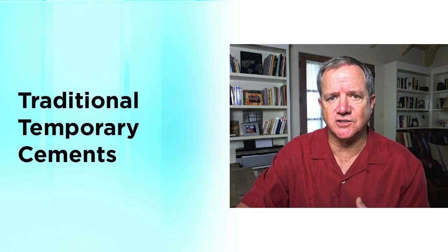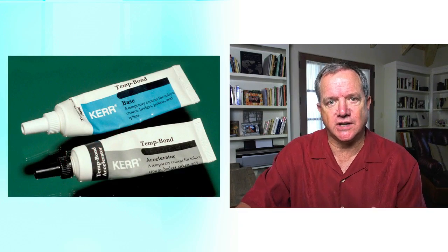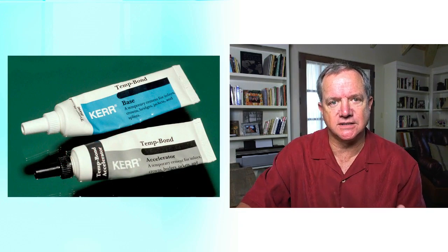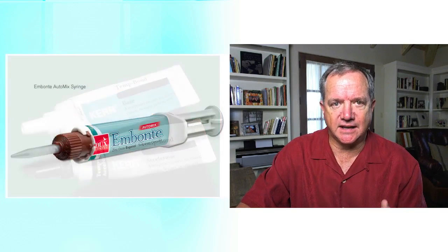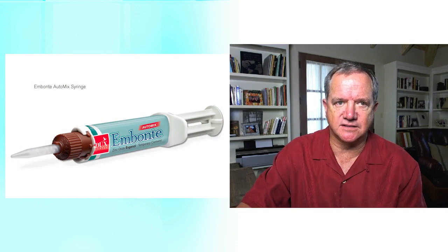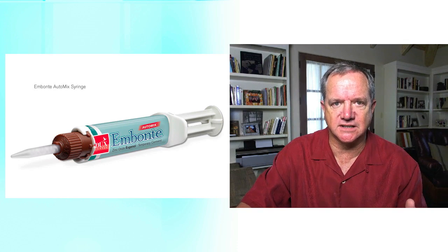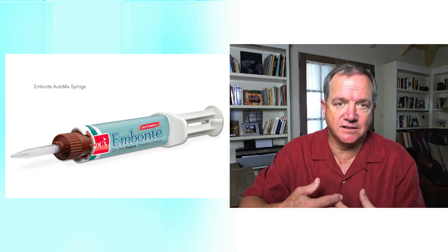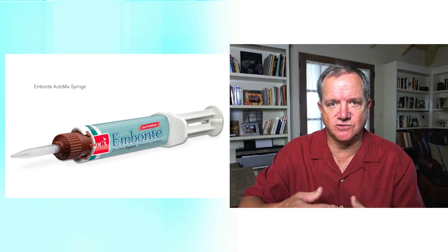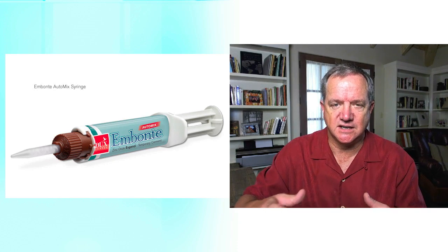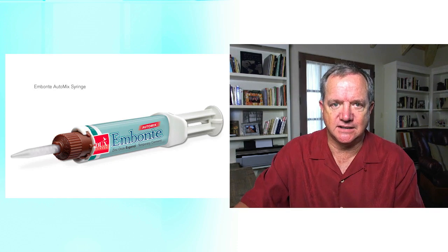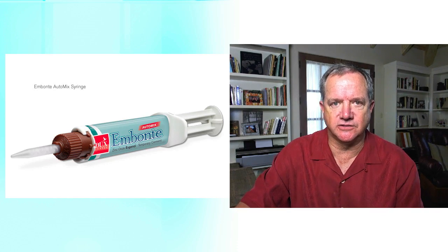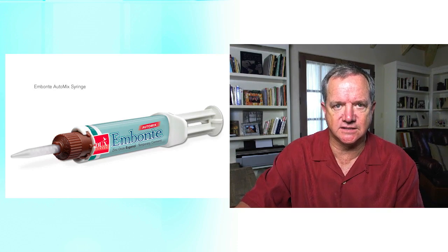What I would consider to be the traditional family would be the eugenol-containing products like Temp Bond. These days you can get much easier mixing if you buy things like the Mbonte from Ducks Dental, which comes in a nice syringe, but it's a very traditional zinc oxide eugenol cement. And to me, there are certain advantages to that. Eugenol has some very favorable characteristics, especially in terms of its palliative nature towards the pulp, its seal, and its antibacterial nature. So I happen to like eugenol-containing cements.